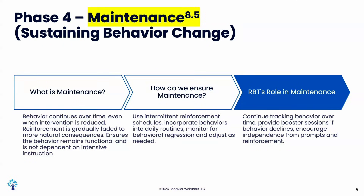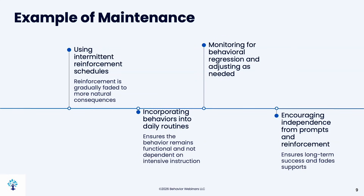The last phase is maintenance. You step away, but the intervention continues — maybe you make the tokens harder, so the child has to raise their hand all week to earn the treat at the end of the week, and you slowly phase that out. Then you come back after a while and take data to make sure the behavior is still occurring. You make sure it continues over time even when the intervention is reduced or eliminated, using intermittent reinforcement and incorporating the behavior into daily routines to encourage independence from prompts and reinforcement.